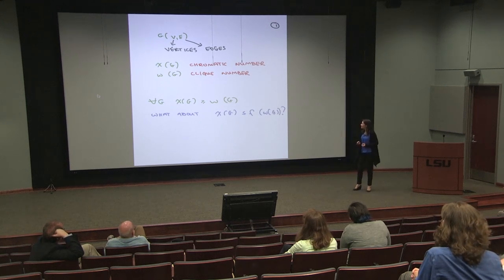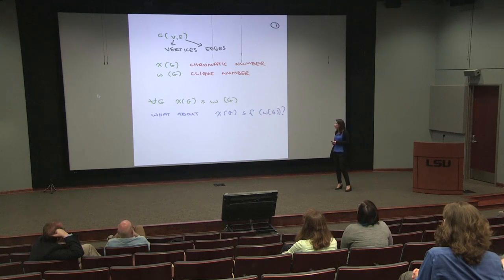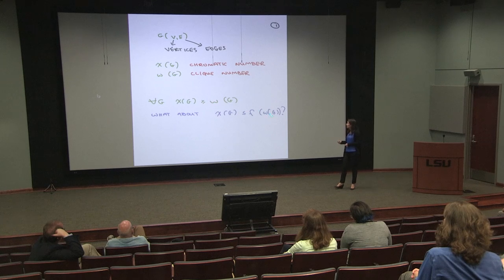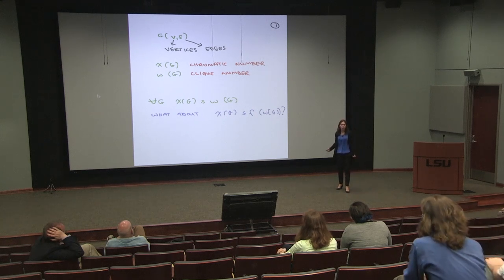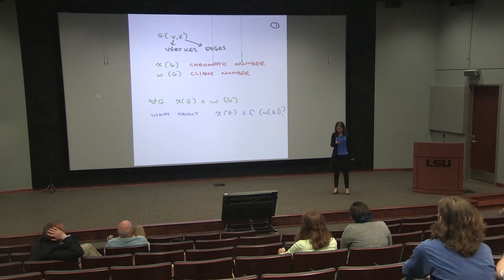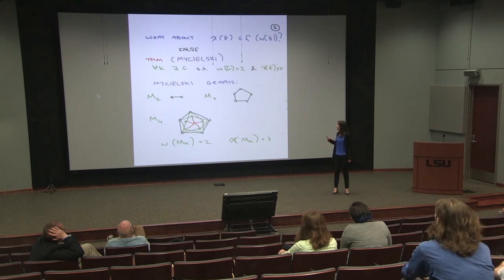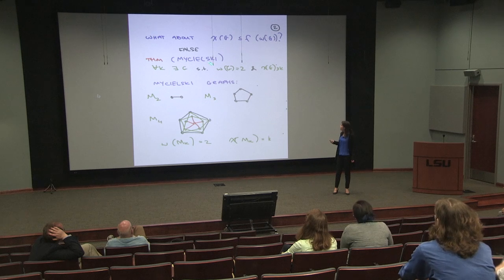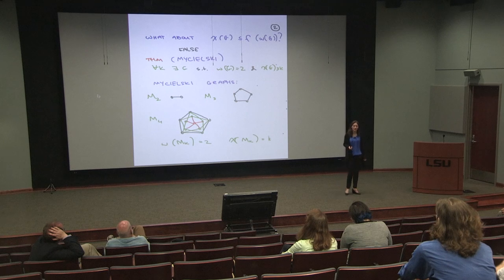Still thinking about graphs, and still thinking about clique numbers and chromatic numbers. We know that the chromatic number is always at least the clique number. Now I want to think about trying to find a bound in the opposite direction — I would like to say the chromatic number is at most some function of the clique number. The first observation is that this is false: there is no such function f that works for all graphs.